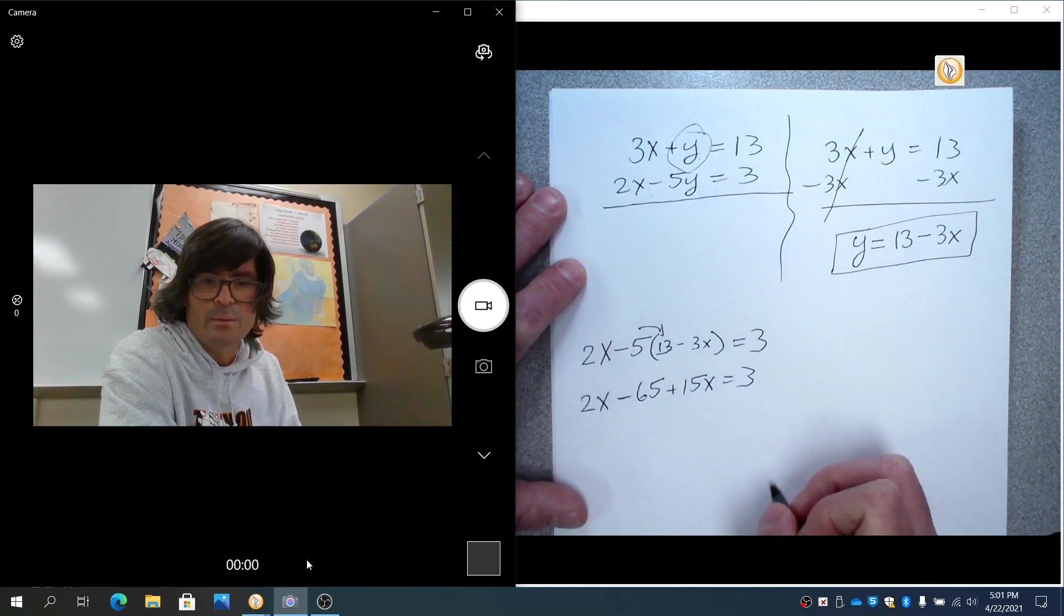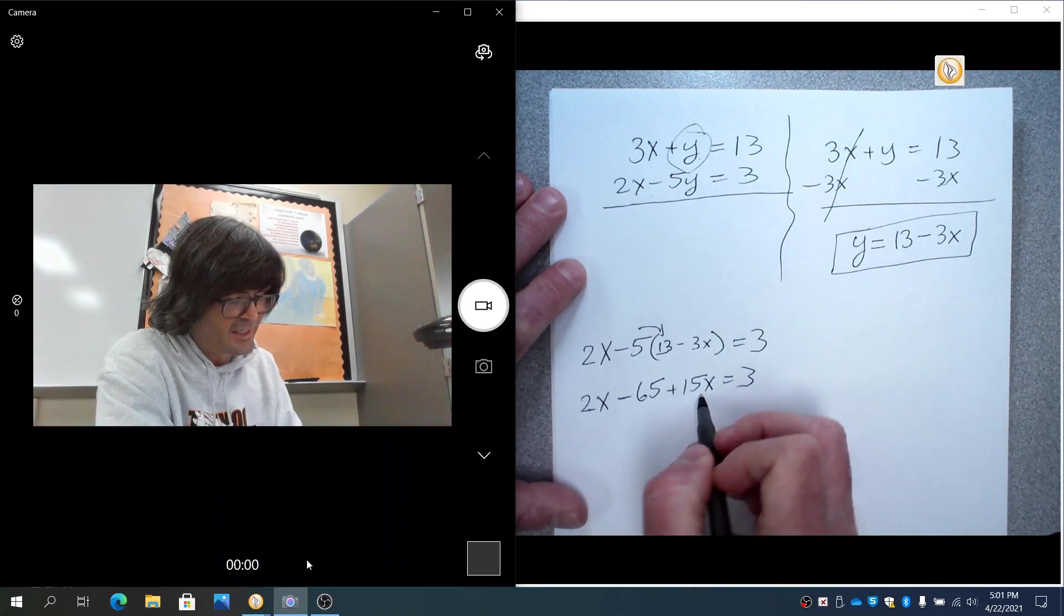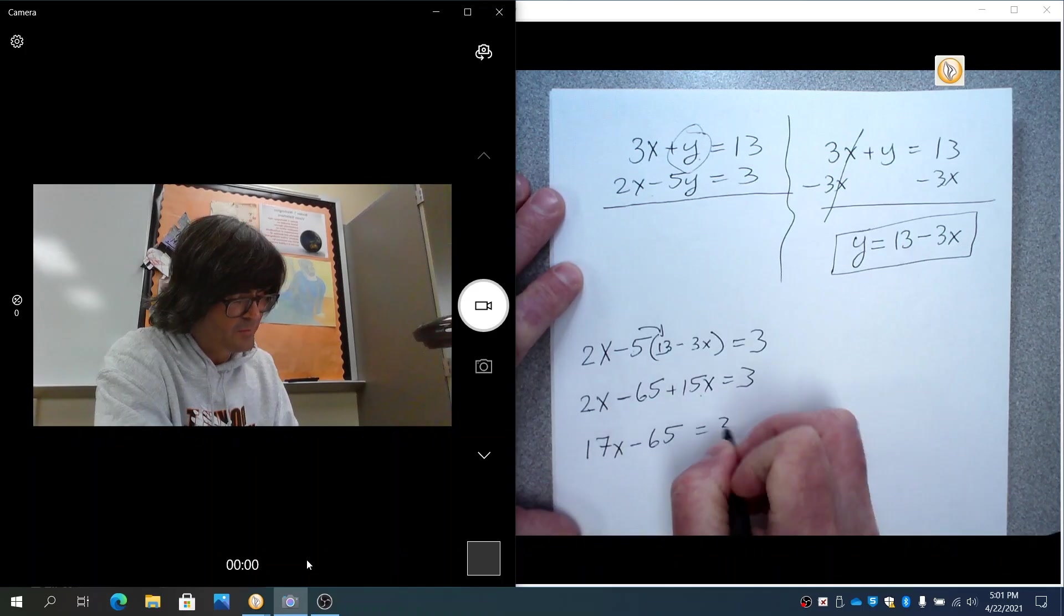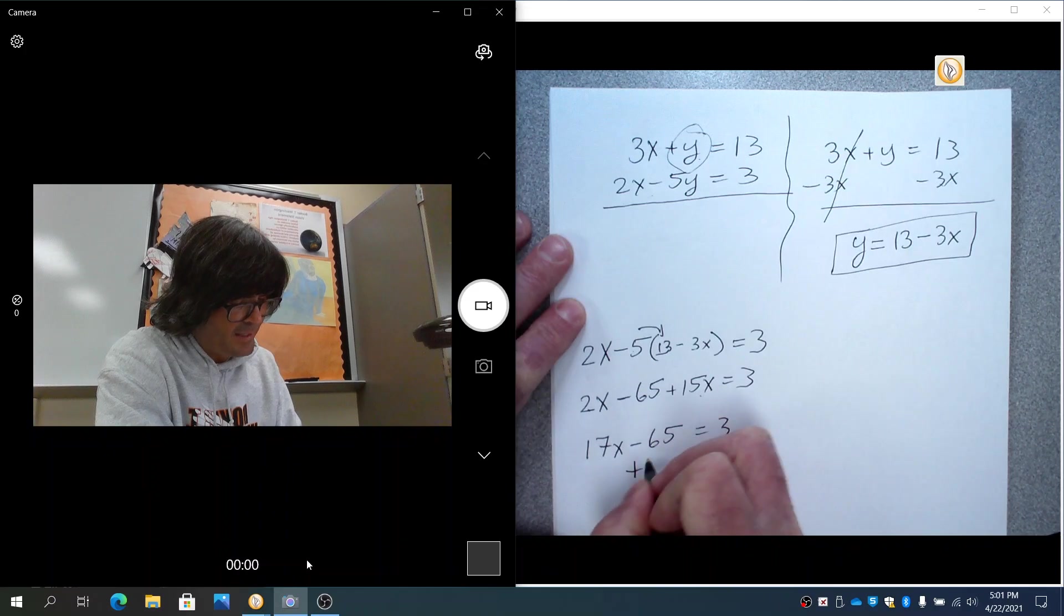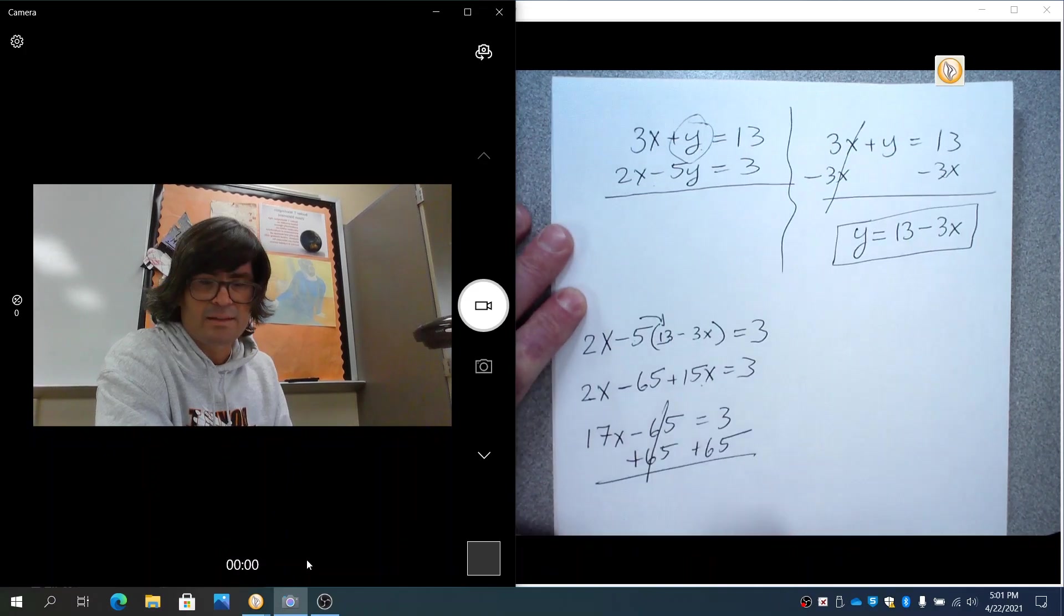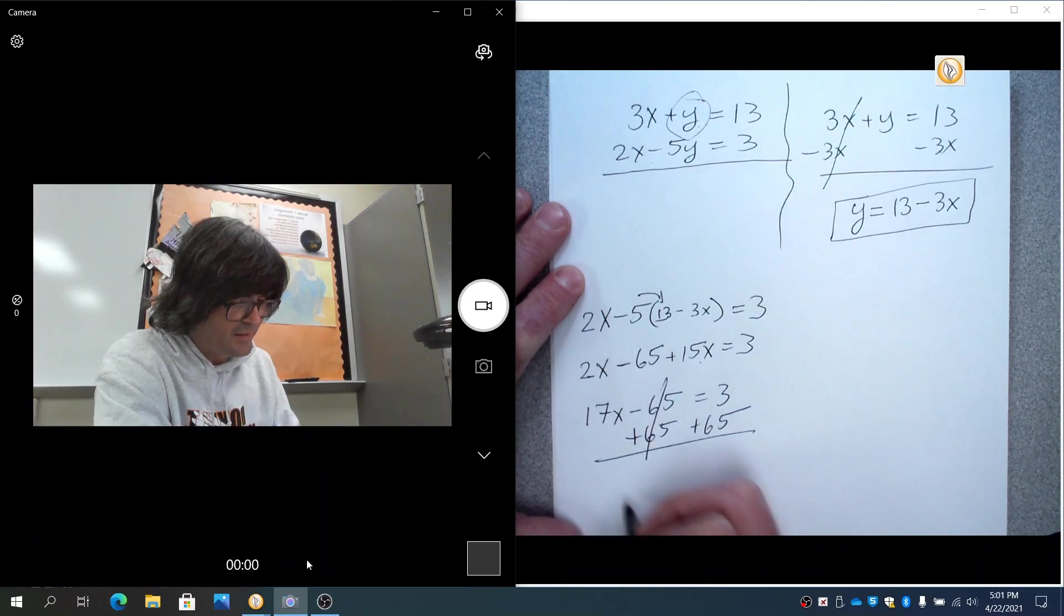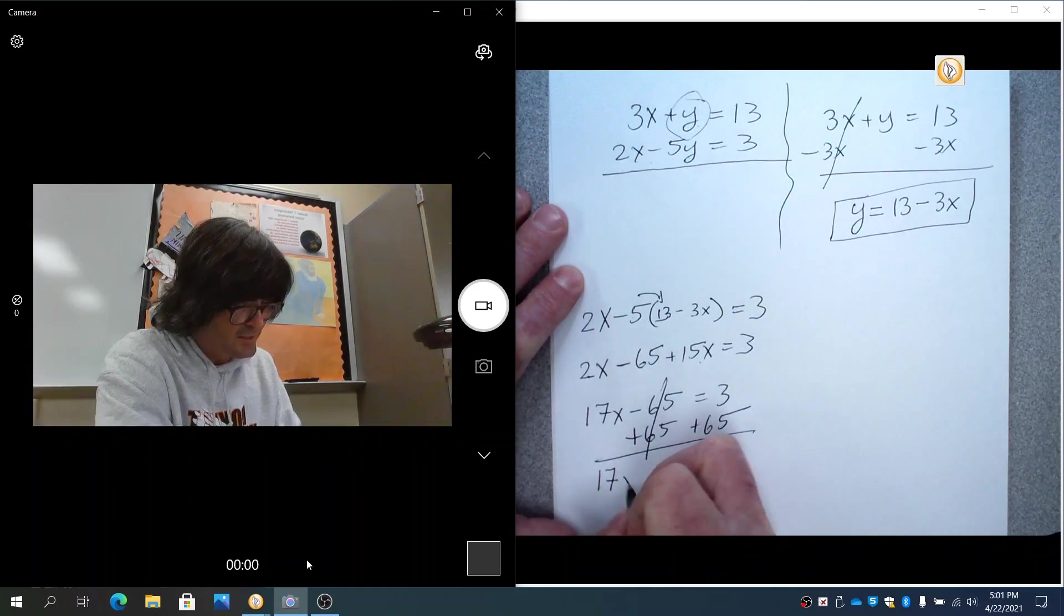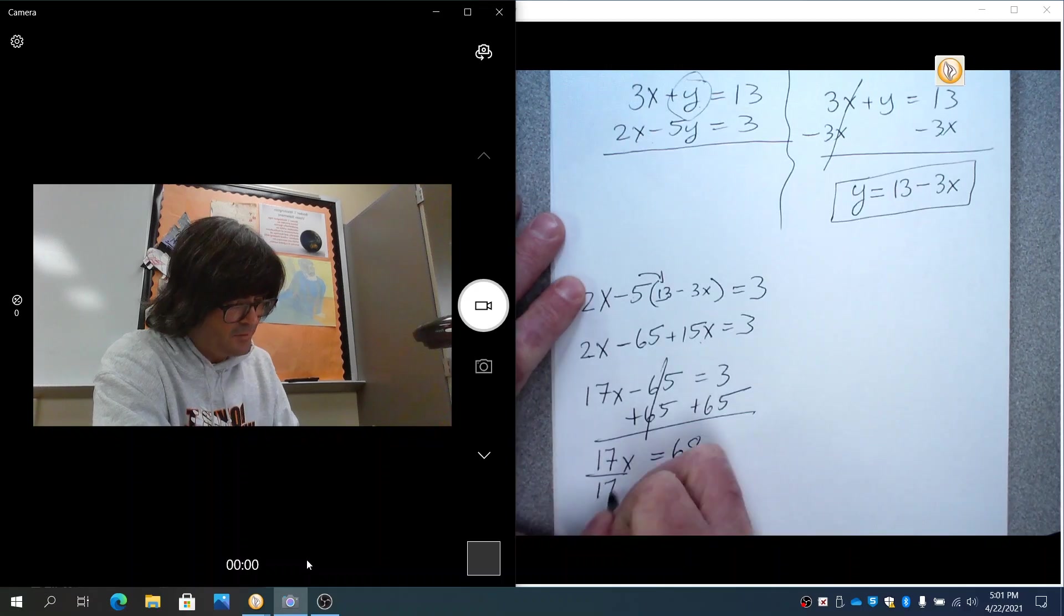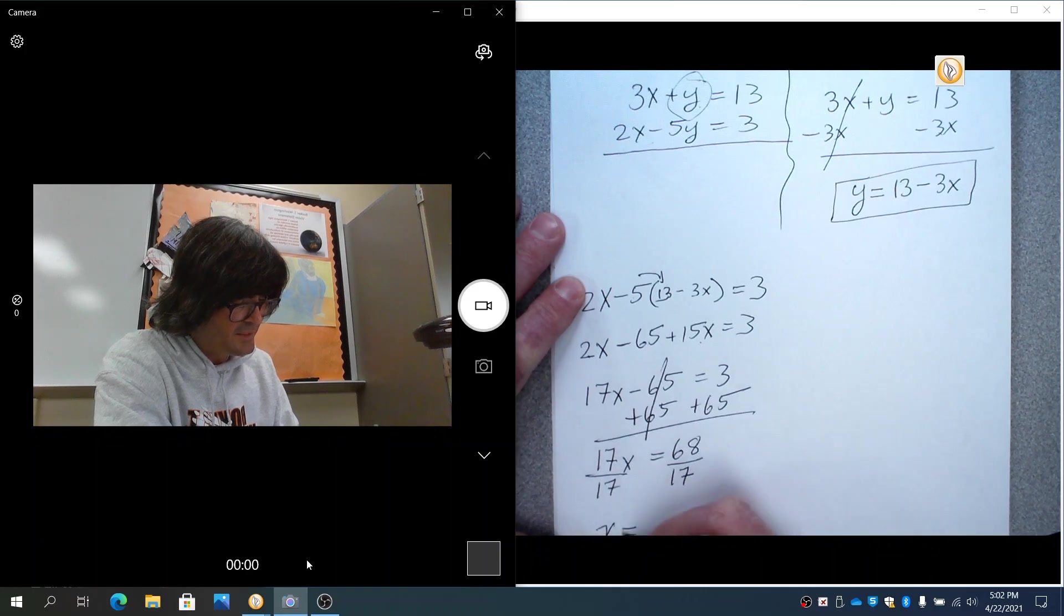We've got some like terms to clean up. 2x and 15x make 17x. Minus 65 equals 3. And then I'm going to add 65 and cancel out that minus 65. So we end up with 17x equals 68. Divide by 17. x equals 4.